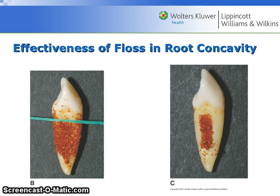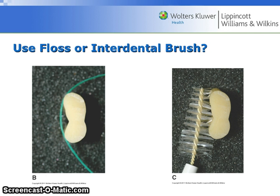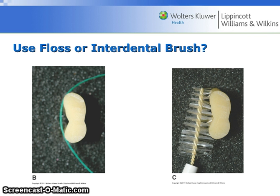Here is an image showing root concavities and dental floss trying to remove debris — it leaves behind a stripe of debris in the root concavity. This is a demonstration of the effectiveness of the interdental brush in cleaning a root concavity, showing how the floss completely misses the indented area while the interdental brush is effective in reaching it.